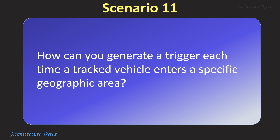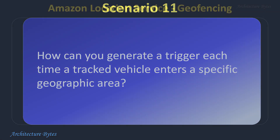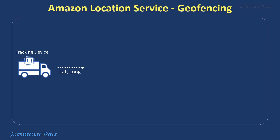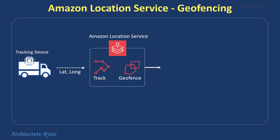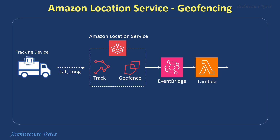How can you generate a trigger each time a tracked vehicle enters a specific geographic area? We could use Amazon Location Service, which lets us add location functionality to applications. It has features like geofencing, which defines virtual boundaries. Any tracked vehicle that enters or leaves these geofences triggers geofence events, which we can use to send alerts — like notifying delivery personnel when nearing a stop — or initiate other actions.